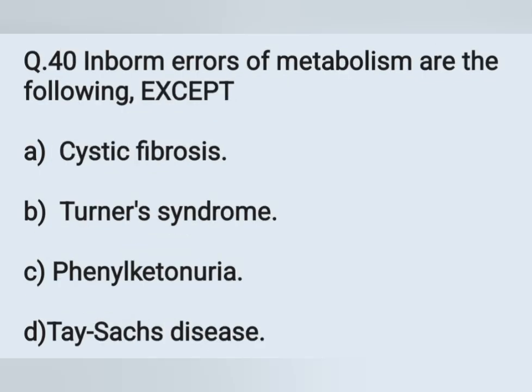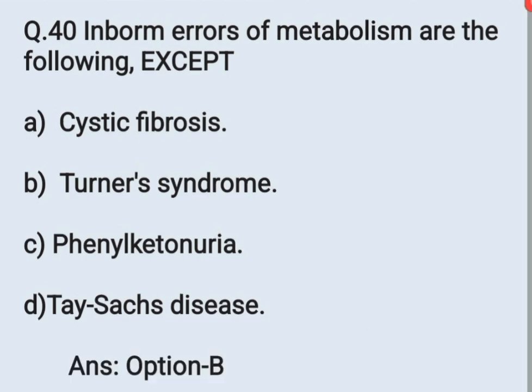Question number 40. Inborn errors of metabolism are the following except — Option A: Cystic fibrosis. Option B: Turner syndrome. Option C: Phenylketonuria. Option D: Tay-Sachs syndrome. The correct answer is Turner syndrome — Option B — as it is a chromosomal abnormality, not an inborn error of metabolism. Cystic fibrosis, phenylketonuria, and Tay-Sachs are all inborn errors of metabolism.